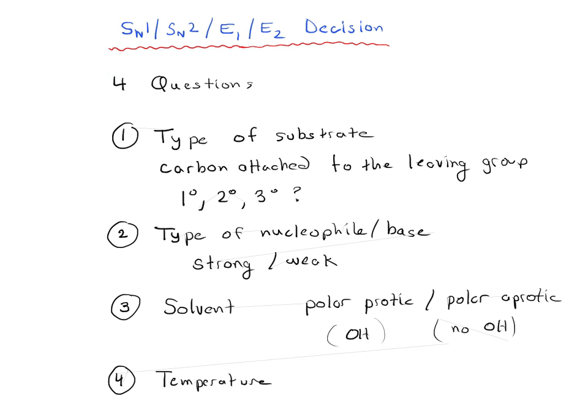So that can certainly play a role in the SN1, SN2, E1, E2 decision as well. So in the next couple of videos, we're going to go through each of these factors in turn, and we're going to see how they impact our decision-making process for figuring out whether a given reaction is SN1, SN2, E1, or E2.